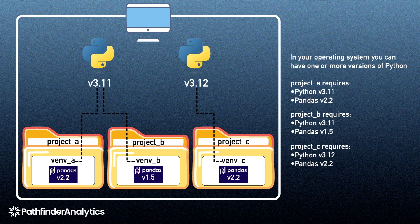Because each virtual environment has its own site packages, installing pandas in one environment doesn't overwrite the pandas installation in another. When you activate a specific environment, Python and pip automatically point to that environment, so you always get the correct interpreter and libraries. All of these virtual environments are isolated and contained within the directory of the specific project they relate to, so whenever you start on project A, you activate venv-a.